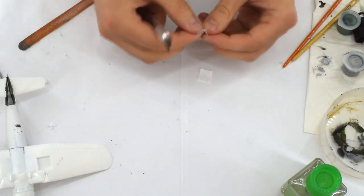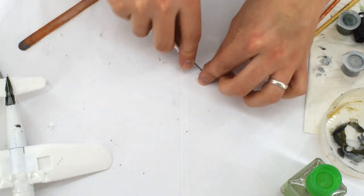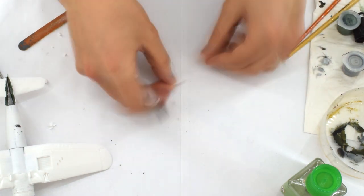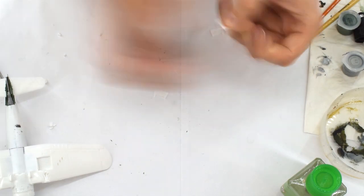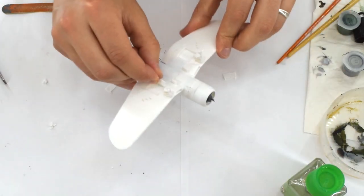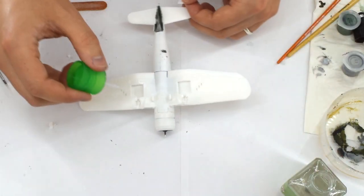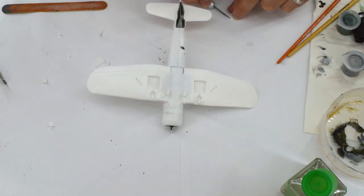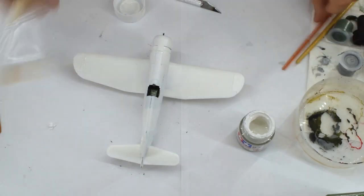Again, the front landing gear covers come as one part that needs cutting. It's at this stage that I add them into place. These will take a little care to make sure they don't droop to one side or the other when added to the bays.